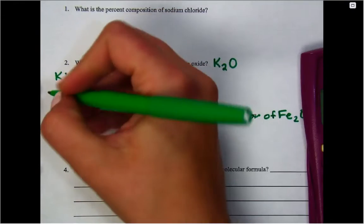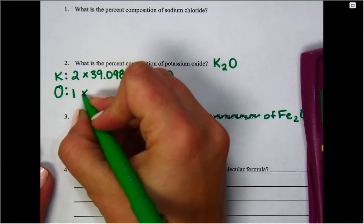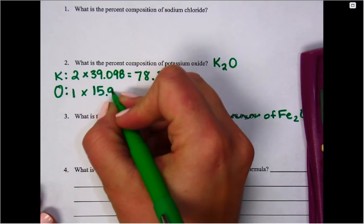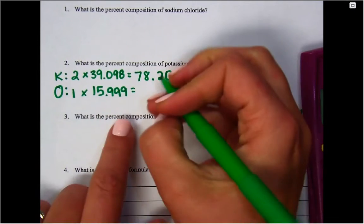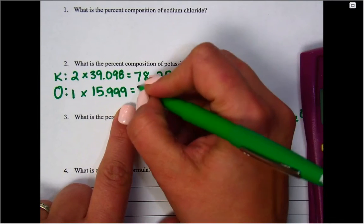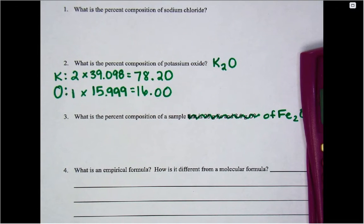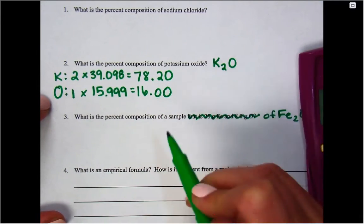Then we're going to get our oxygen. How many oxygens are there in this compound? There's only one. So we're going to say 1 times oxygen's molar mass, which is 15.999. Notice I'm not rounding my periodic table numbers, but I round my answer after I multiply things. So that means we're going to round this one. We're going to say 16.00.